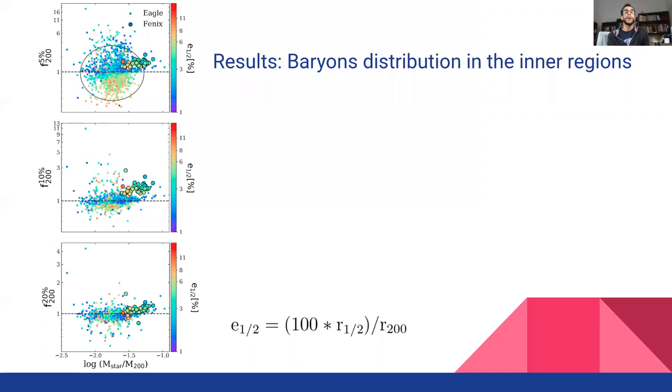So now let's go with some results. In this figure, we show the dark matter mass ratio as a function of stellar to halo mass. The points are colored by the galaxy compactness factor C at 5, 10 and 20% of the virial radius.